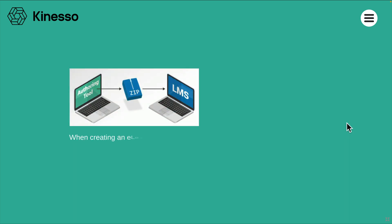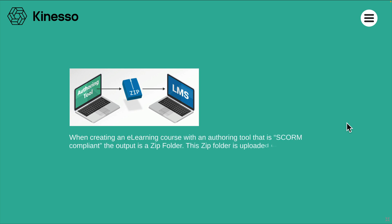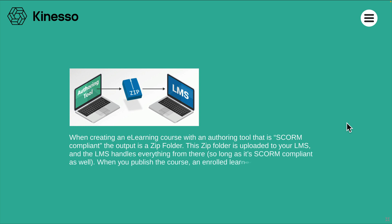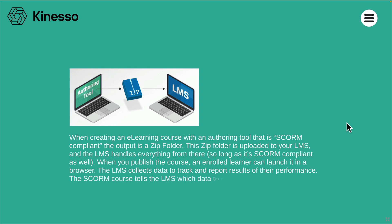When creating an e-learning course with an authoring tool that is SCORM compliant, the output is a zip folder. This zip folder is uploaded to your LMS and the LMS handles everything from there, so long as it's SCORM compliant as well. When you publish the course, an enrolled learner can launch it in a browser. The LMS collects data to track and report results of their performance. The SCORM course tells the LMS which data to receive.